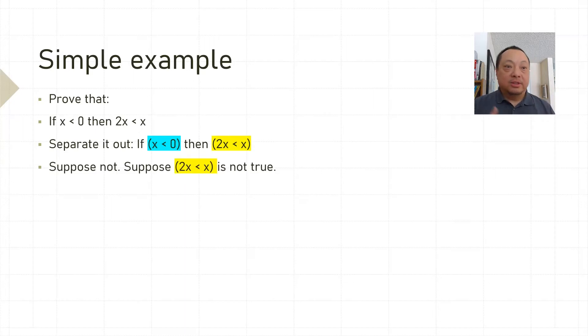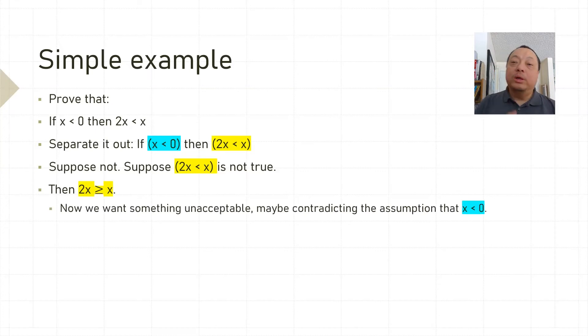Suppose not. Suppose 2x less than x is not true. That means 2x is greater than or equal to x. Now we want something unacceptable, maybe contradicting the assumption that x is less than 0. I'll need to go from 2x to x somehow. I know, I'll subtract x.